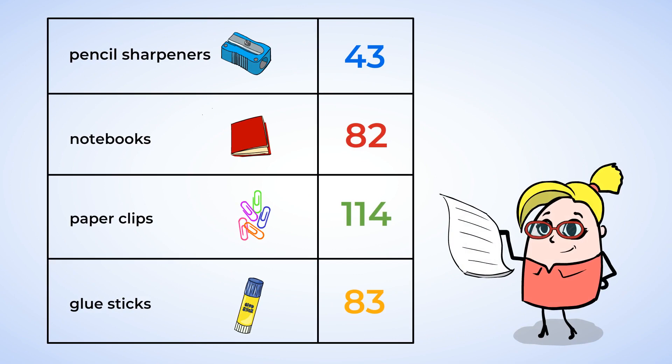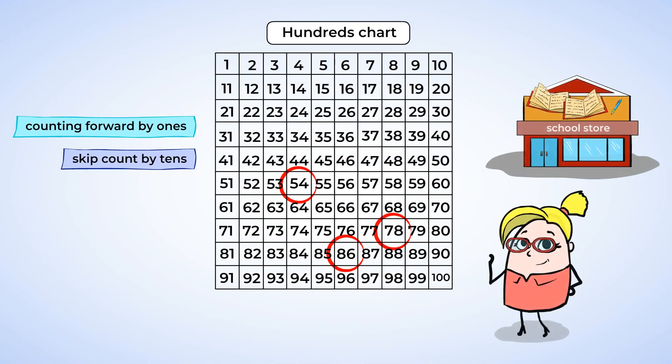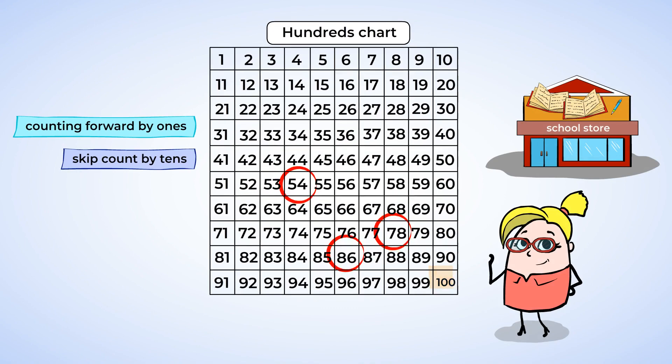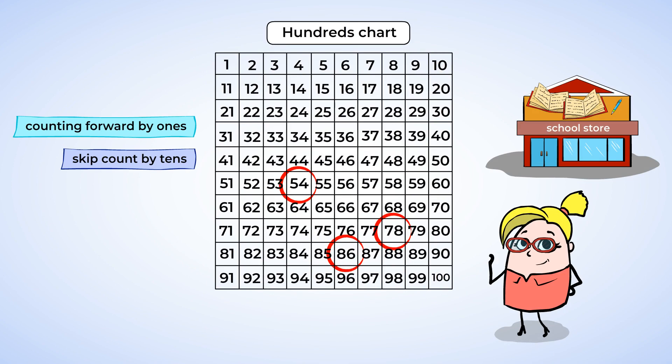You did really well counting up the supplies in the school store. Okay, let's recap. We learned how to count objects by tens and ones. If you have a big group of objects, you can start by counting tens. A hundreds chart is a great tool to help us with this. Then, once there are just a few left, count them by ones.